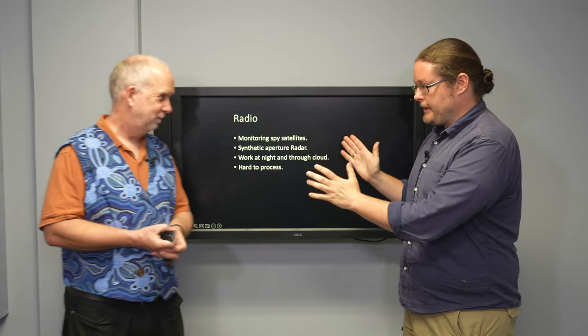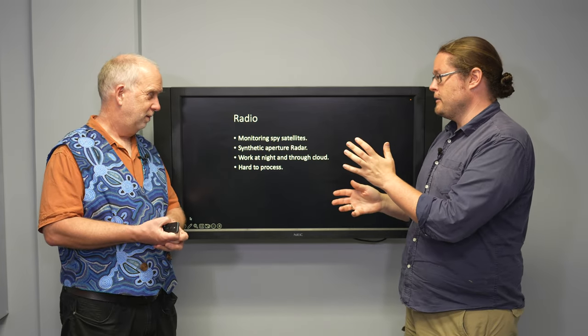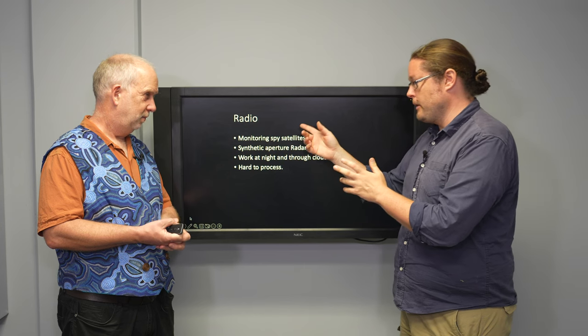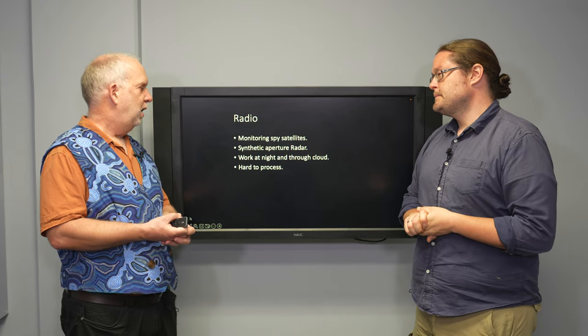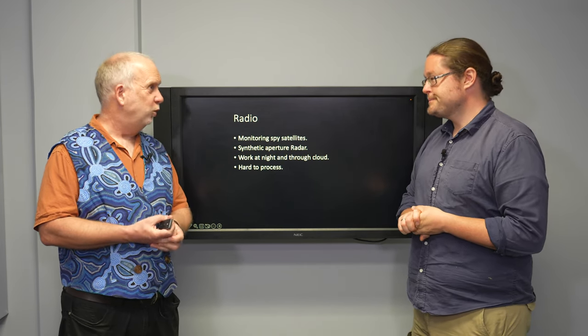Now, the other main color of light that we can see that's transparent through the Earth's atmosphere is radio waves. That's right. And this is also widely used for Earth observation.